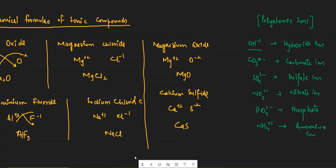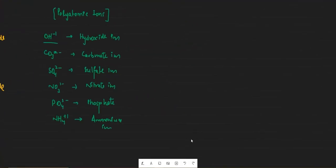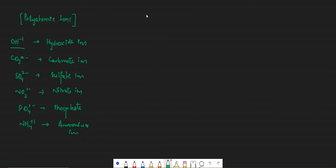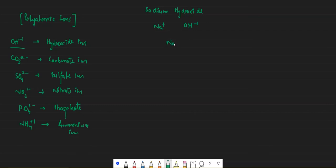Let's try some chemical formulas with polyatomic ions. Let's do sodium hydroxide. Na is plus 1 and hydroxide is OH minus 1 — the charges are balanced, so the formula of sodium hydroxide is NaOH.